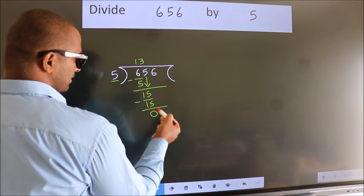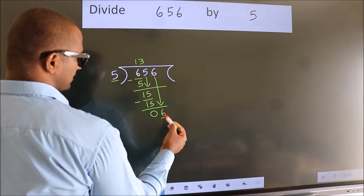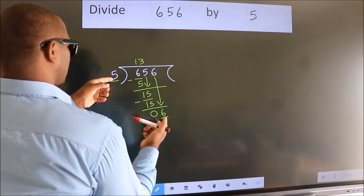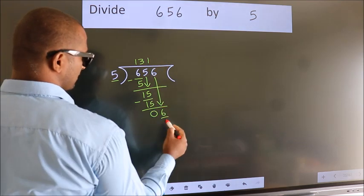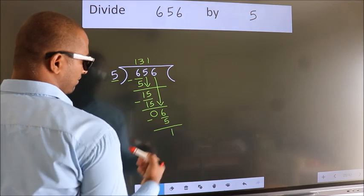After this, bring down the beside number. So, 6 down, giving us 6. A number close to 6 in 5 table is 5 once 5. Now we subtract. We get 1.